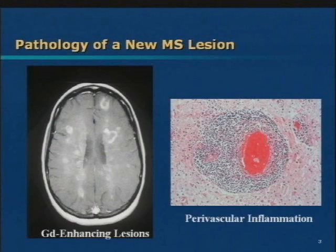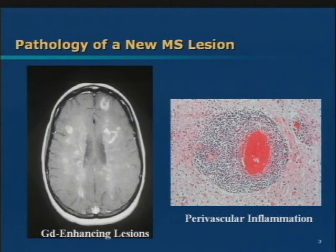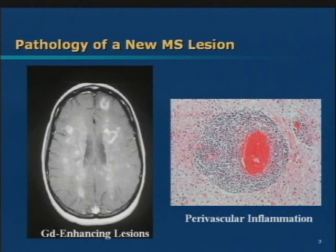What you're seeing here is what MS lesions look like under the microscope on the right. That red circle is a blood vessel, and around it all those dots are immune cells that are crossing through the blood-brain barrier where they're going to cause damage. On the left is an MRI scan of someone with MS where there are a number of these lesions. Everywhere you see this bright white signal in the brain is one of those inflammatory lesions that could be causing damage.